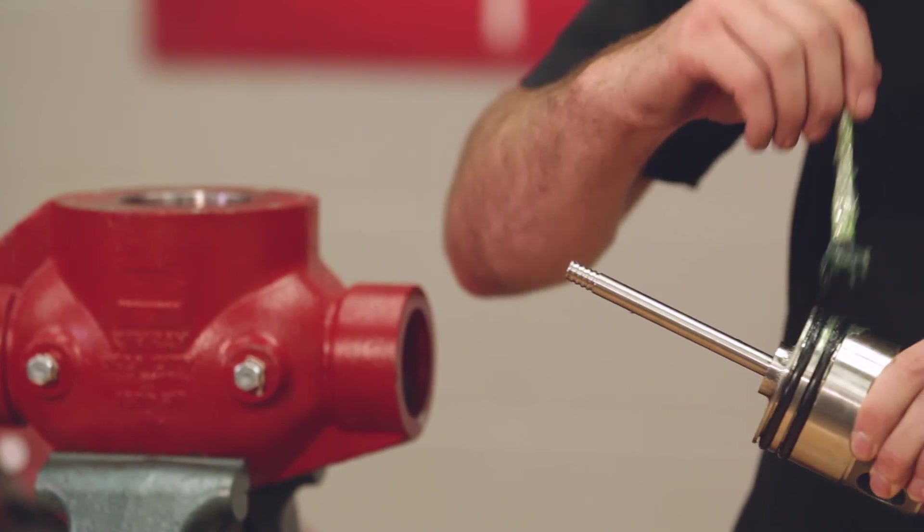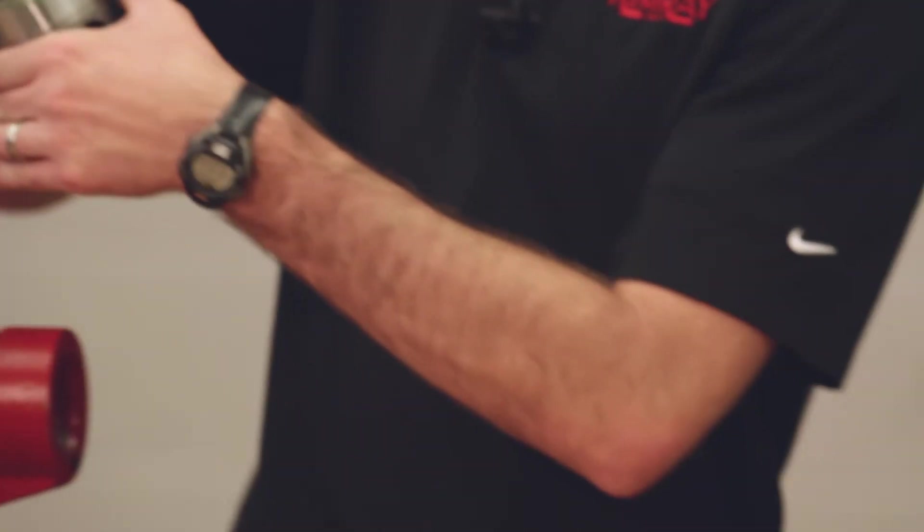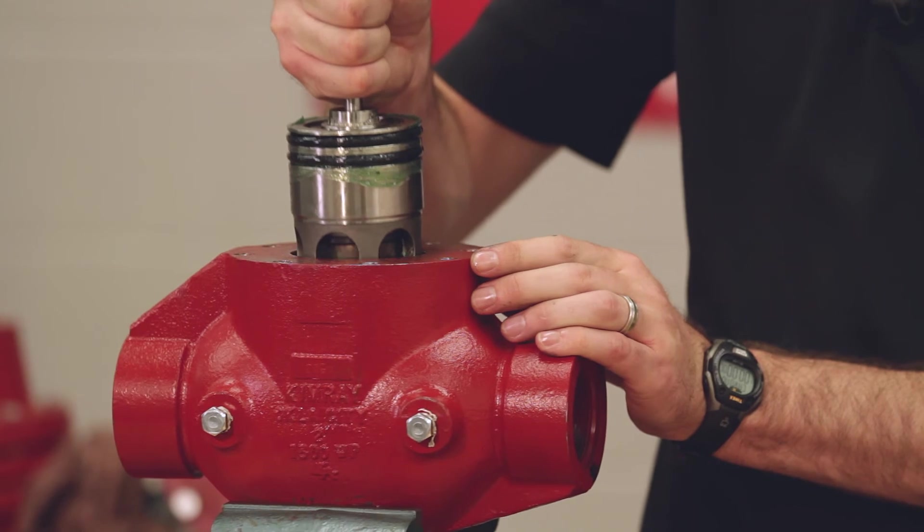You'll also want to grease the outer O-rings. Now you can put your entire cage and piston assembly back into the valve body.